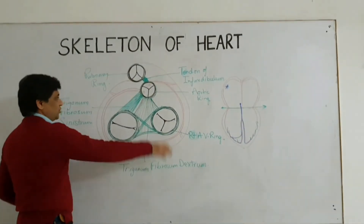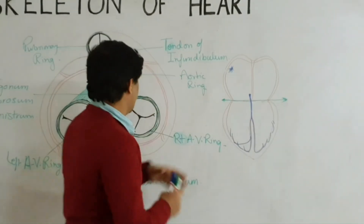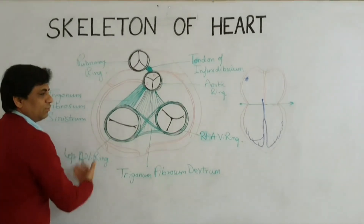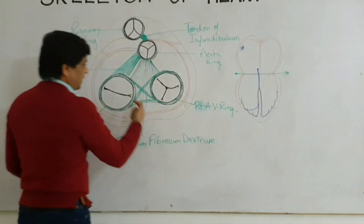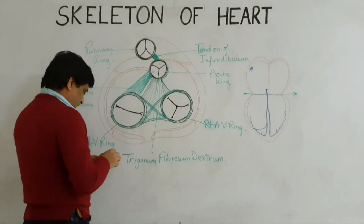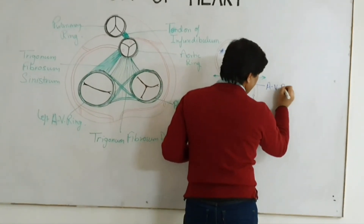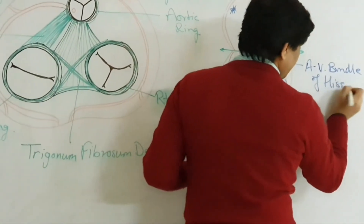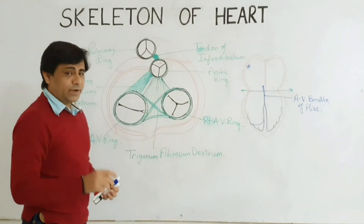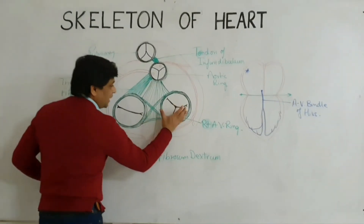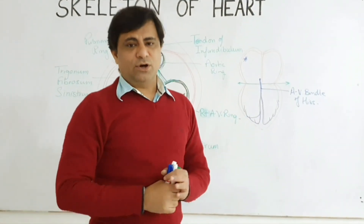Once again, the purpose of this fibrous skeleton is that the musculature of the atria is not continuous with the musculature of the ventricles — they are separated by this skeleton. Above the skeleton, the muscles of the atria attach; below, the muscles of the ventricles attach. The membranous portion of the interventricular septum is also attached below. The only point of passage of impulses is through the AV bundle of His, which is a modified muscle of the heart. It also prevents collapse of the valves and maintains the patency and stability of the heart.